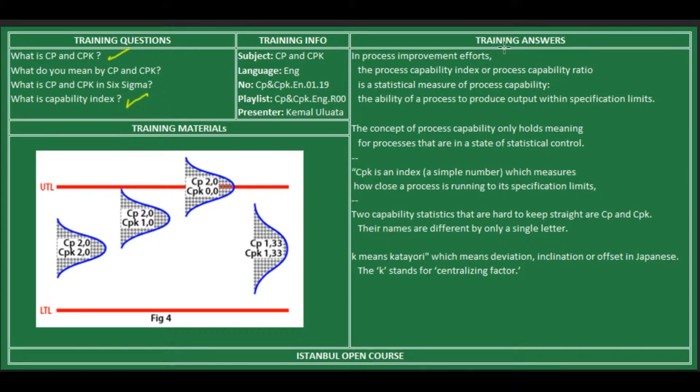In process efforts, the process capability index or process capability ratio is a statistical measure of process capability - the ability of a process to produce output within specification limits.